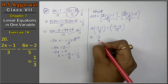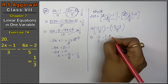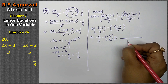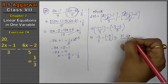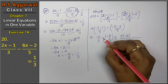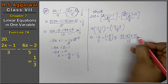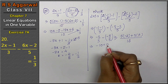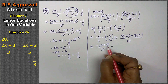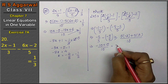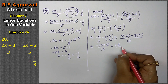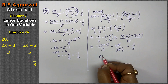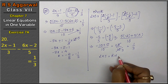We now have minus 2 upon 3 minus bracket (minus 5 upon 5). Taking LCM of 3 and 5, which is 15: 5 into minus 2 gives minus 10, and minus minus plus gives plus 3 into 5 equals plus 15, all upon 15. Opposite signs subtract, giving 5 upon 15, which simplifies to 1 upon 3. That means left hand side equals right hand side.